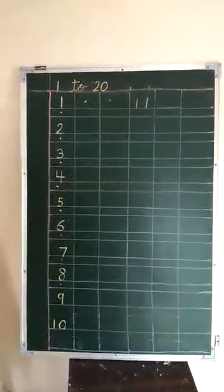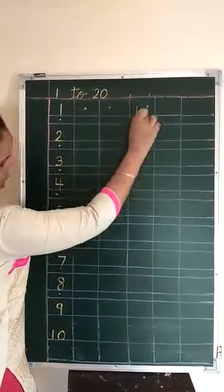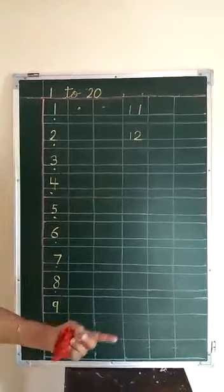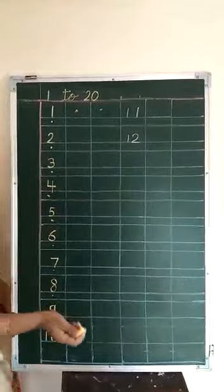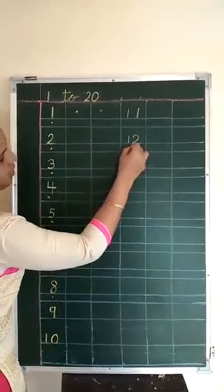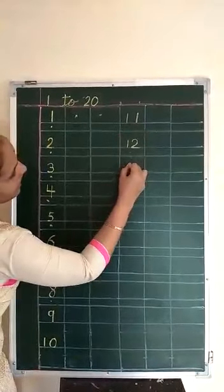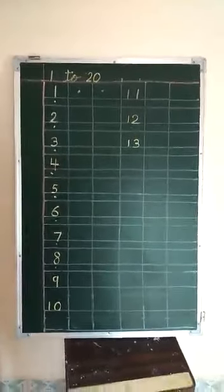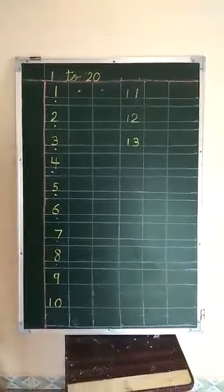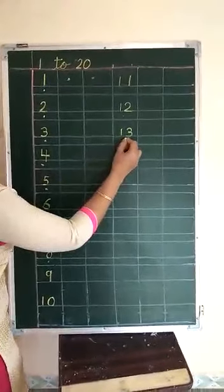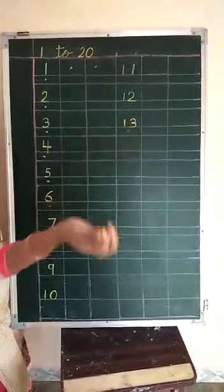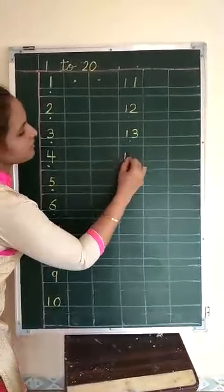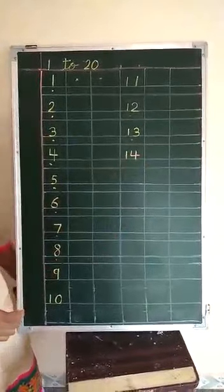After 11, which number comes? 12. Again leave 1 box and write down 12. Which number comes after 12? 13. Put 1 dot — means we have to leave 1 box. Which number comes after 12? 13. Write down 13. After 13, put 1 dot. Which number comes after 13? 14. Write down 14.